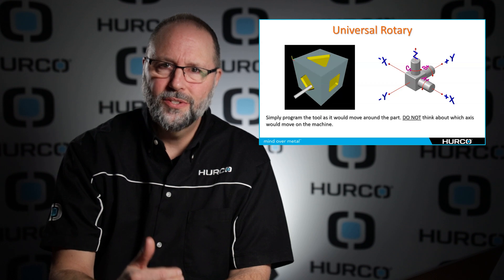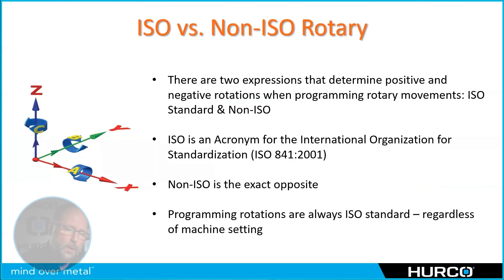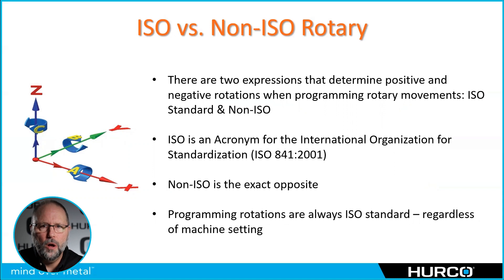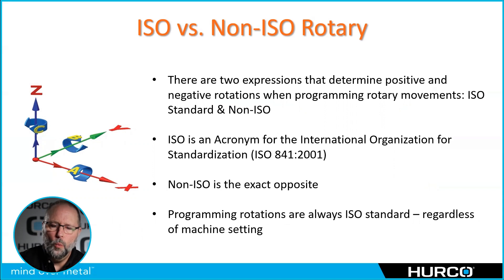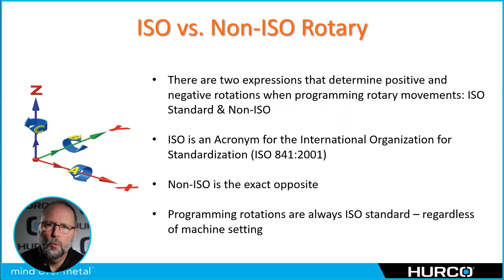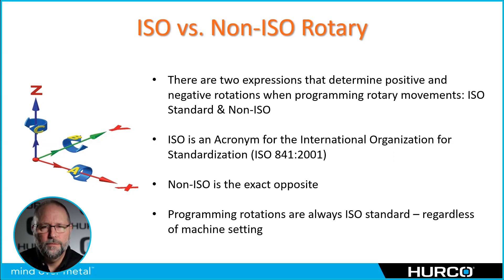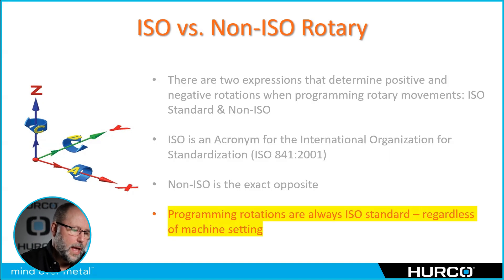A is with X, B is with Y, C is with Z. Now as far as the machine goes, there is a setting that you can change the rotary direction from what we call ISO standard to non-ISO. ISO standard is basically just an industry standard direction of rotation — very much like a three-axis machine where positive X, Y, and Z are the same on every machine you program. There are some models where HURCO was backwards from ISO on all rotations, but all machines now ship with ISO standard turned on. However, that doesn't change the way we program — we still always program in ISO standard.